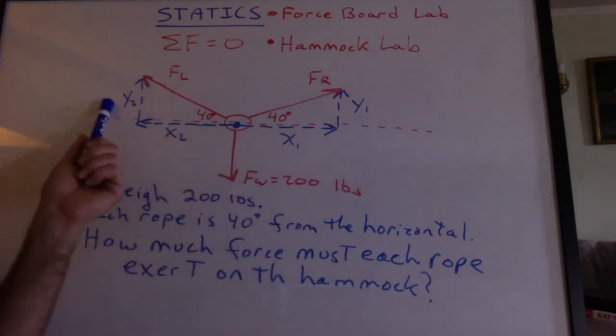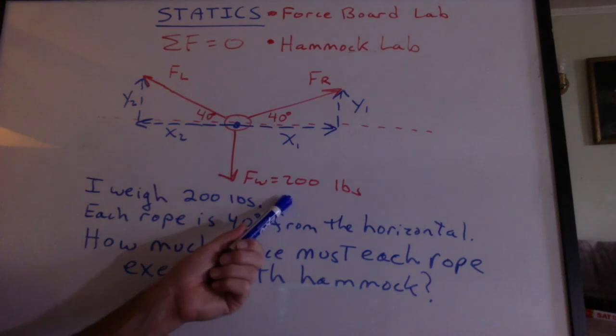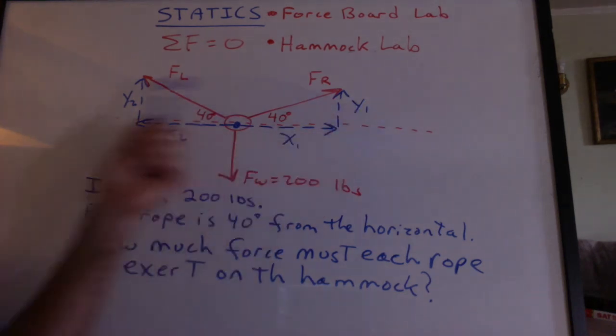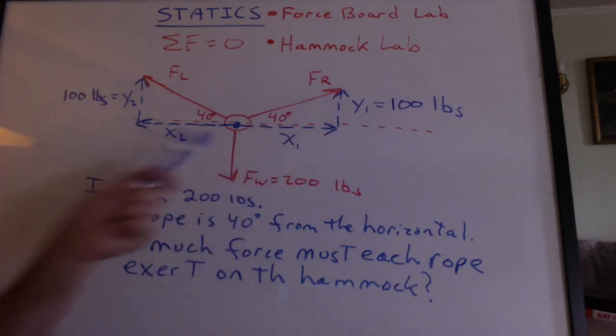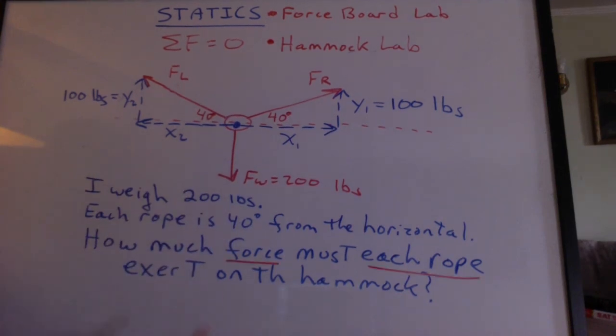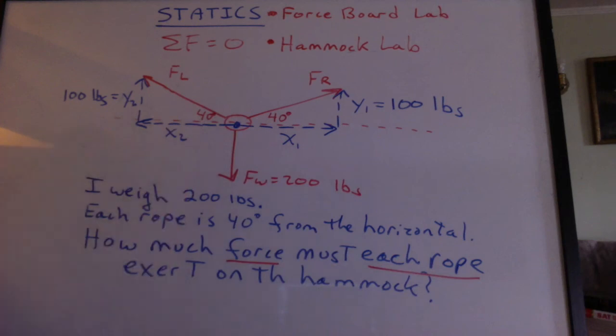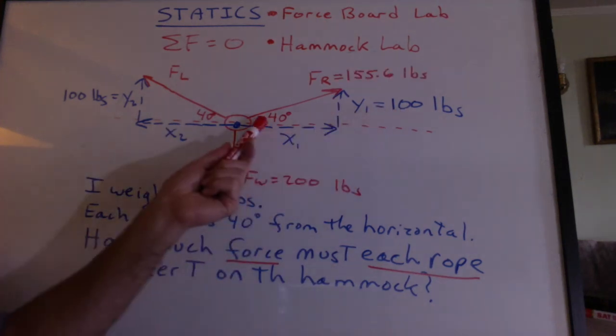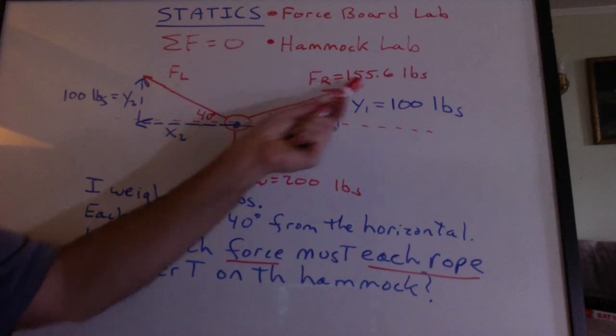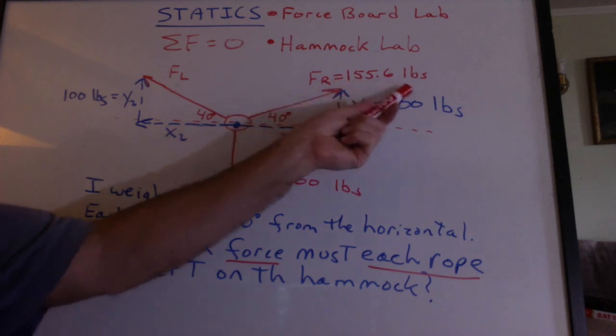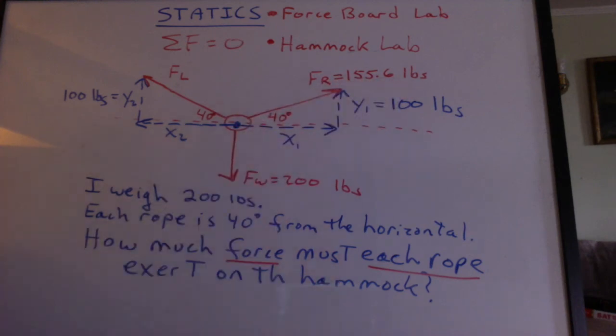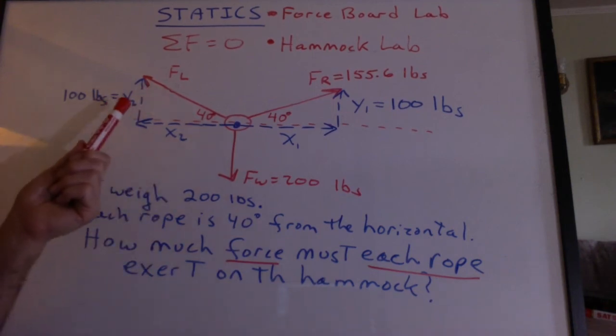So what would these things have to add up to? 200 pounds. Then, therefore, each 100 plus 100 would equal the 200 going down. Now we're ready to find the force of each rope pulling on the hammock. You're going to do 100 divided by the sine of 40 to get this vector's magnitude, 155.6 pounds. You could certainly round that off to 156.